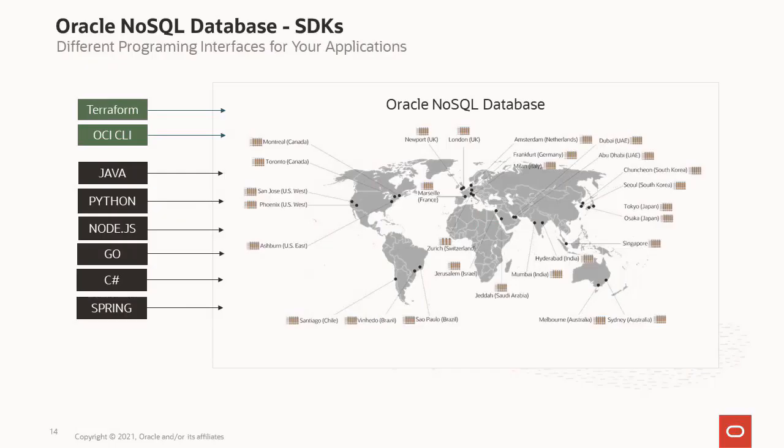We're currently live in 30 OCI regions. We have SDKs for all top languages: Java, Python, Node, Go, C#/.NET, and Spring. We also have Terraform for scripting, the OCI command line interface, and console access. So there's a wide variety of ways to access your data.